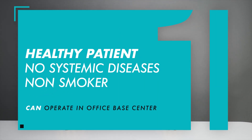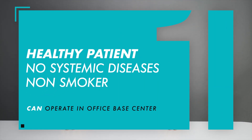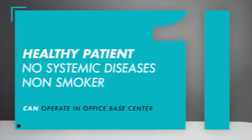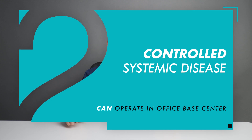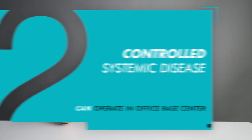There are ASA 1 through ASA 6. An ASA 1 patient is a healthy patient with no systemic diseases and is a non-smoker. An ASA 2 patient may have a controlled systemic disease that is not life-threatening, such as high blood pressure that is well controlled with medication, or diabetes that is well controlled.